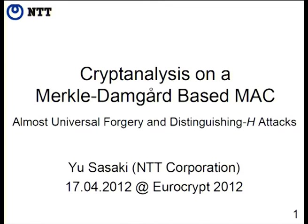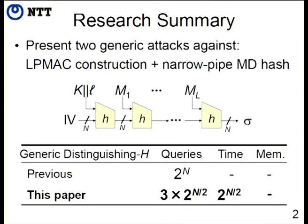Thank you for the introduction. My name is Yu Sasaki. I'd like to start with a research summary. In this paper, we present two generic attacks against Merkle-Damgård-based MAC construction, which instantiates a narrow-pipe Merkle-Damgård hash. The construction is described in the figure, but I will explain the details later.